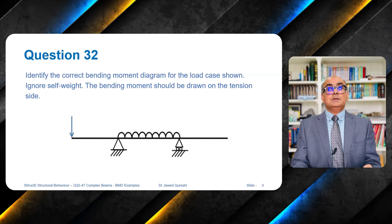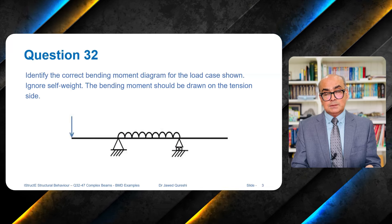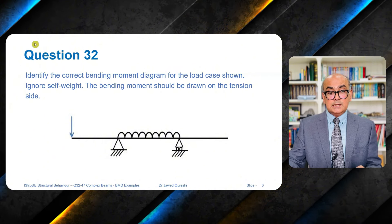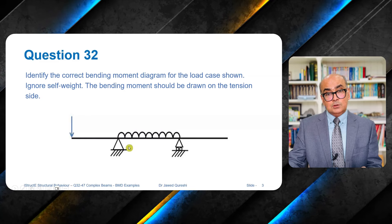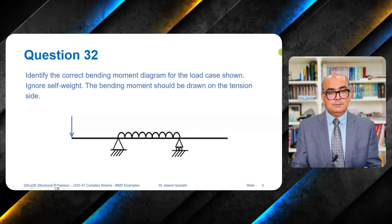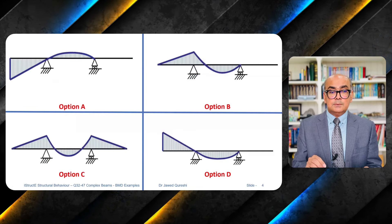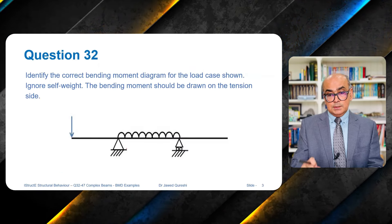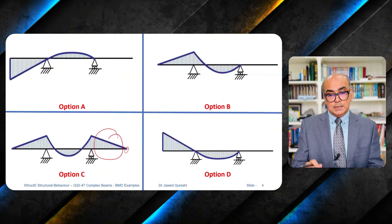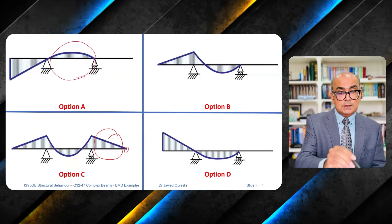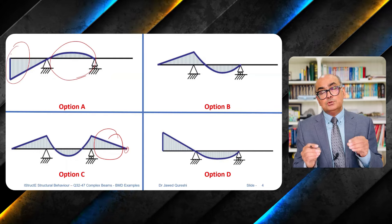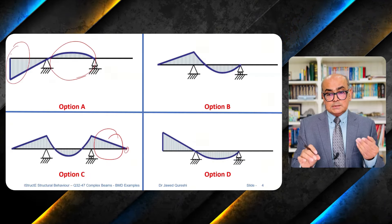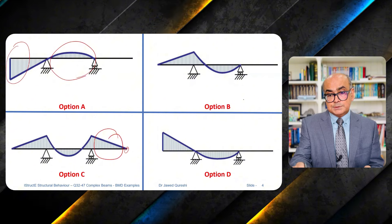The first example is a double overhanging beam with a uniformly distributed load in the middle and a point load at the end. Looking at this structure, I would expect some tension at the overhang portion and sagging between the supports. There are four options to choose from. Option C is discarded because there is no support beyond the roller, so there will be no moment there. Option A is also wrong because you cannot have a moment where a point load is applied — there is no lever arm, so moment will not be generated.